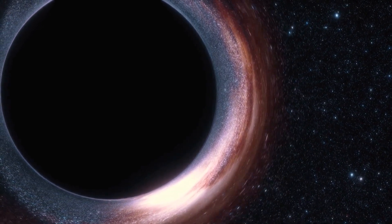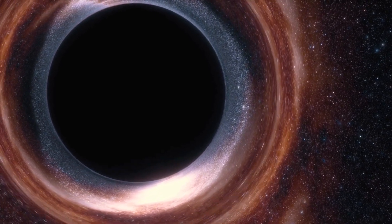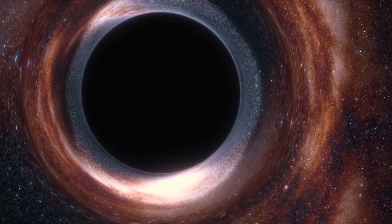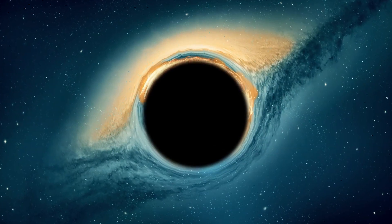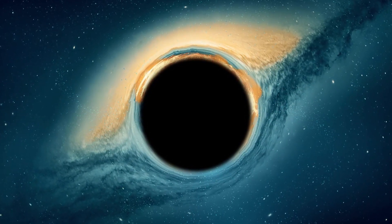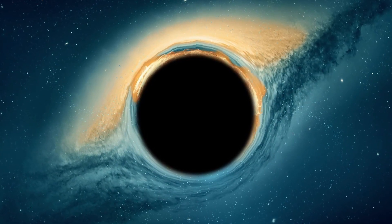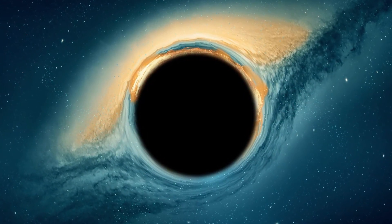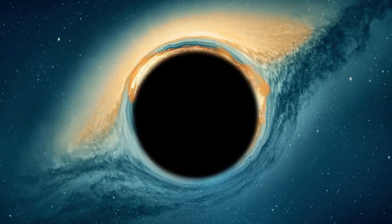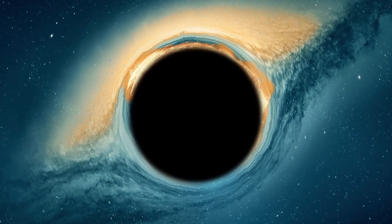As we well know, black holes possess extremely powerful gravitational force that even light cannot escape. However, in the vicinity of a black hole, one often finds a spinning disk of material, such as gas or dust, concentrated by its immense gravity. This material heats up as it spirals towards the black hole, emitting X-rays and other types of radiation, creating a luminous ring known as a corona.